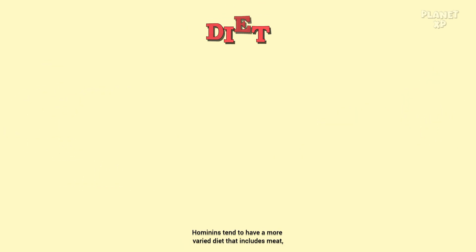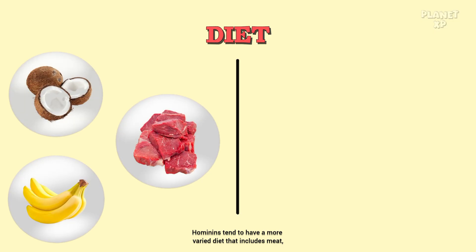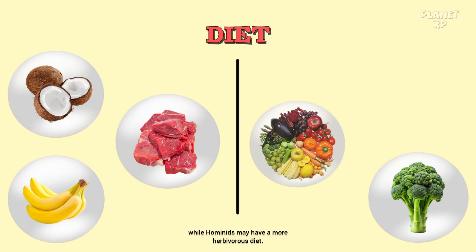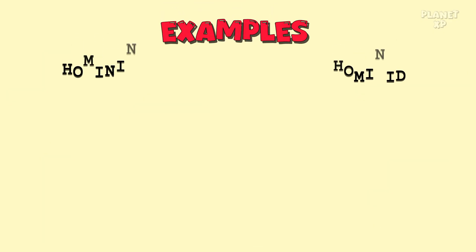Third, diet: hominins tend to have a more varied diet that includes meat, while hominids may have a more herbivorous diet. Here are some examples of hominids and hominins.